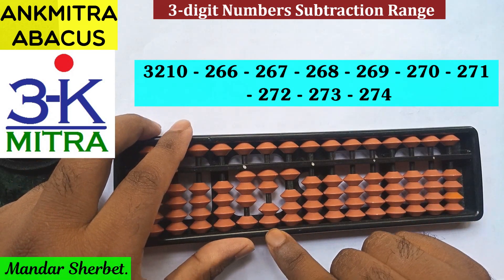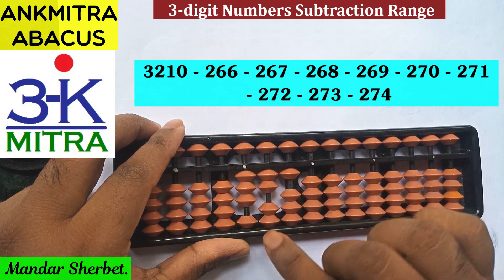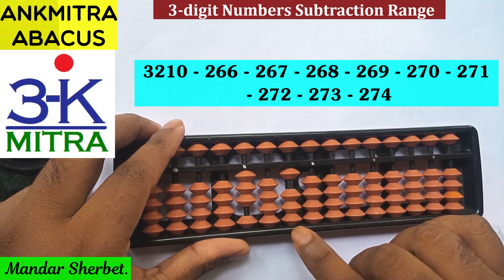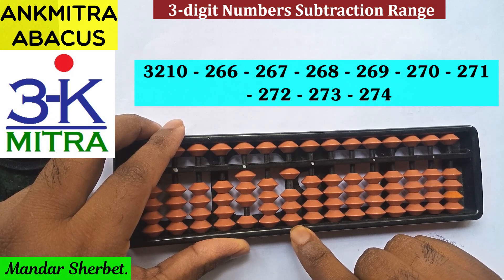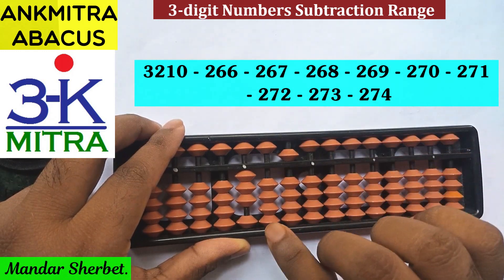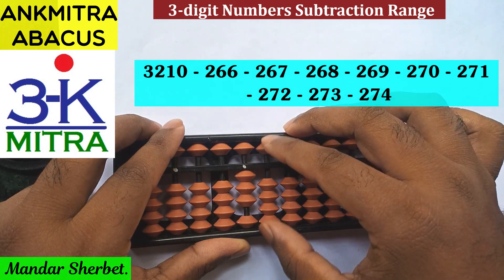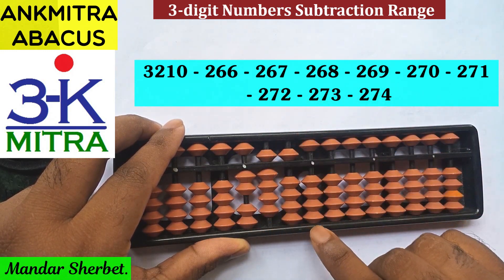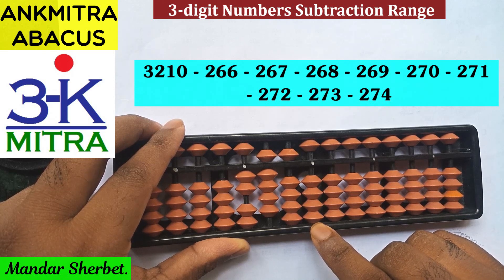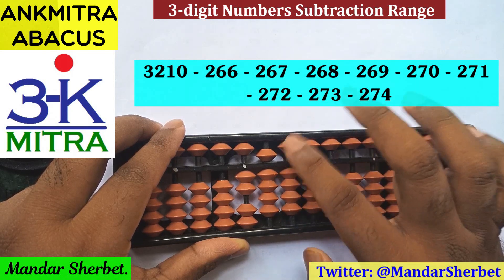Let's start with the first number, minus 266. Minus 2 can be done on the hundreds place directly. But on the tens place, for subtraction of 6 we will have to use the big combination formula for minus 6, which is plus 4 and minus 10. For minus 10 here, again subtraction of 1 using its big frame formula: plus 9, minus 10. On the units place, subtraction of 6 will be done using its regular big frame formula, which is plus 4, minus 10. For minus 10 again: plus 4, minus 5.